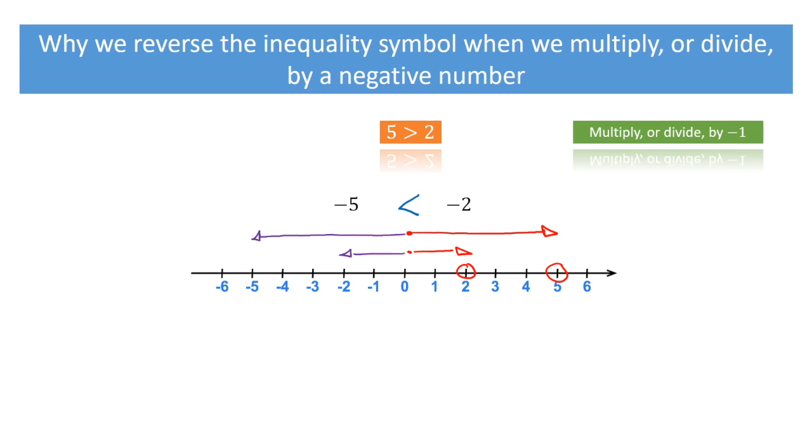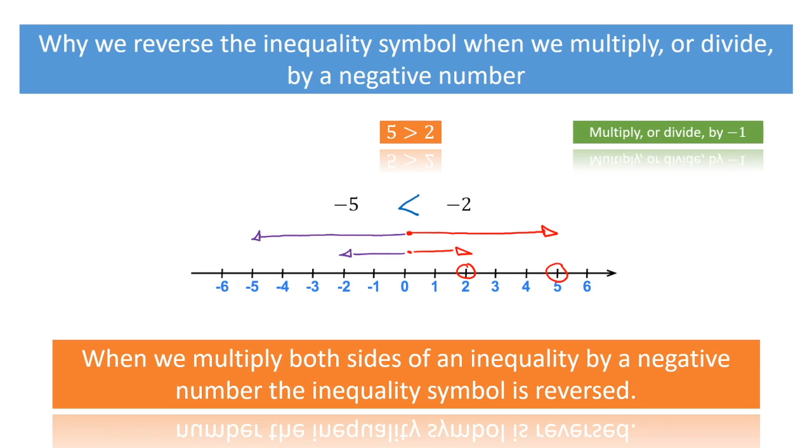And something similar to this will happen every single time we multiply or divide both sides of an inequality by a negative number. So, that leads to the key rule to remember. When we multiply both sides of an inequality by a negative, the inequality symbol is reversed.